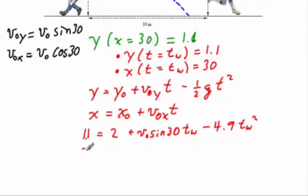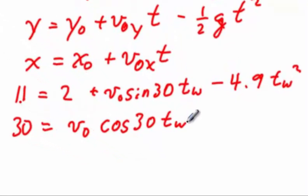Similarly, we need to fill in numbers into the x equation. We wish x to be 30 at this moment. X zero was zero, and so we'll leave that out, yielding v zero cosine 30 times time of the win.